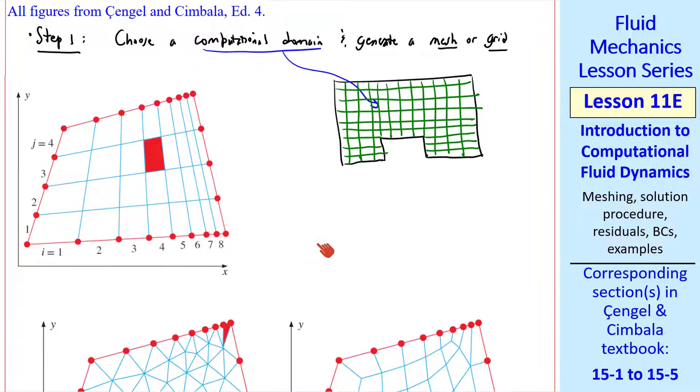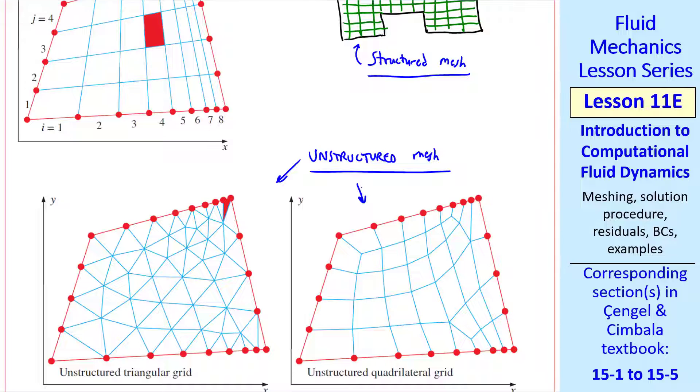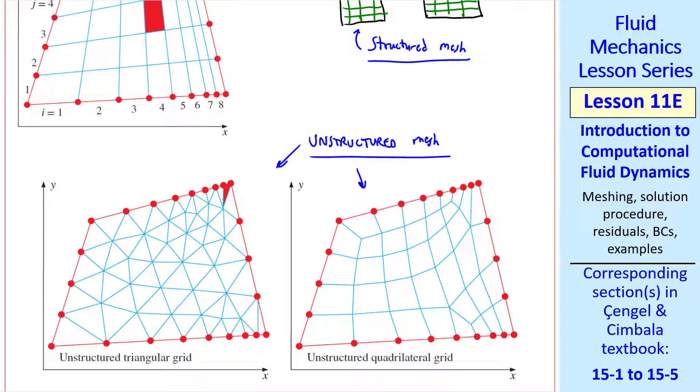There are various types of meshes. This would be an example of a structured mesh. In a structured mesh, you can identify a cell by some indices, here i and j. This is the cell that has i equal 4 and j equal 3. You can also have an unstructured mesh. Here are two examples. These are all in two dimensions, by the way.